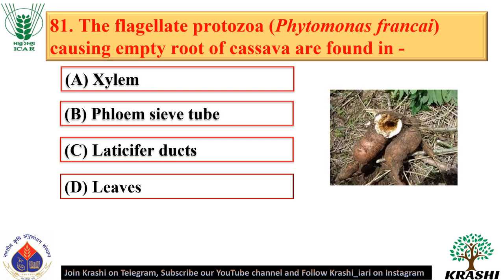Question number 81. The flagellate protozoa Phytomonas francai causing empty root of cassava is found in laticifer ducts — option C.